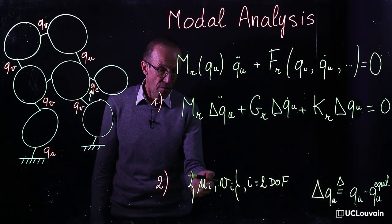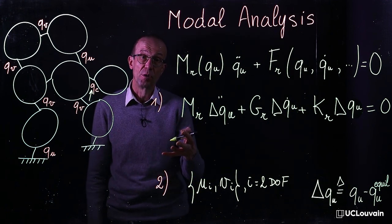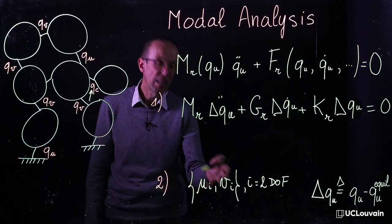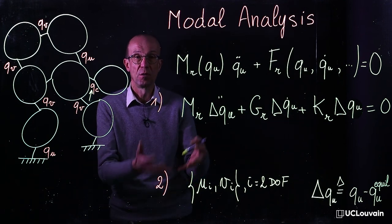The eigenvalues will indicate the nature of the motion, while the eigenvectors will indicate the kind of motion associated to it.